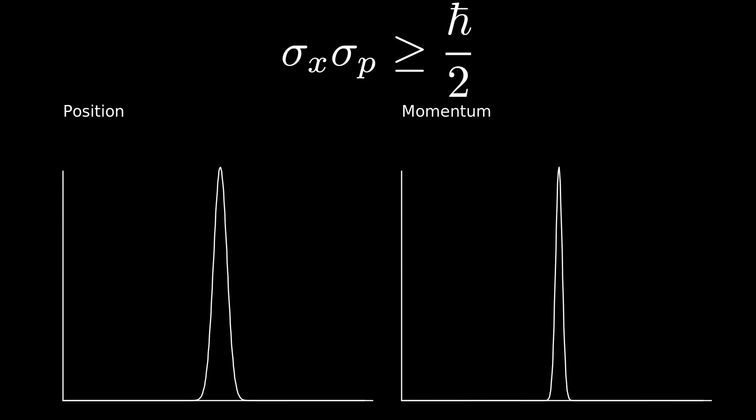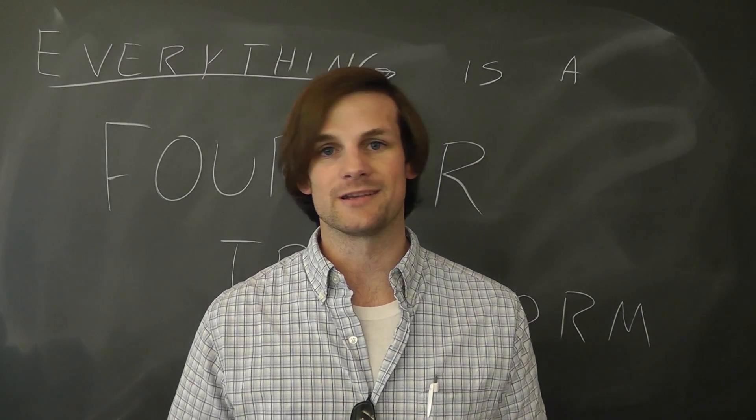Now, the most interesting part of this visualization is not necessarily the fact that our knowledge of the two spaces are inversely proportional, but the fact that the operation that allows us to move between position and momentum space is actually a Fourier transform. Because, of course, it's a Fourier transform. Fourier transforms are literally everywhere.